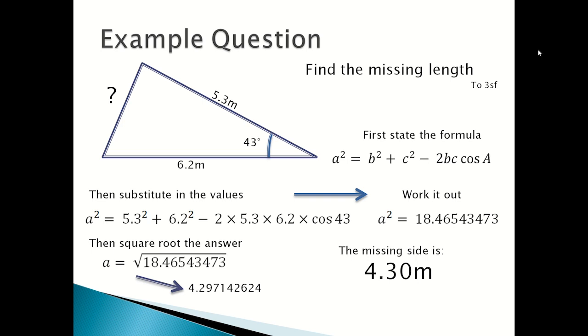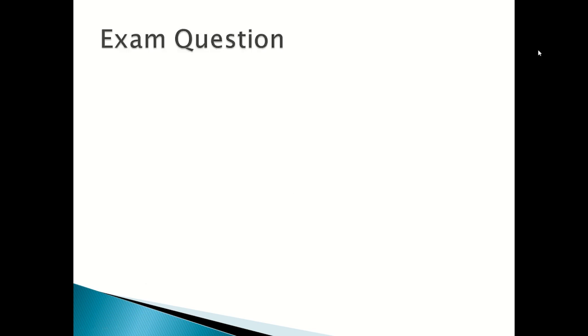Now we are going to look at an exam question. Work out the size of the angle ABC. Sometimes you have to rearrange the cosine rule. Instead of finding the missing side, now you have to look for the missing angle.